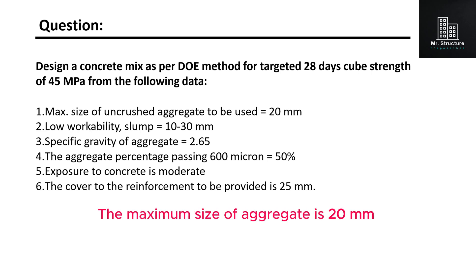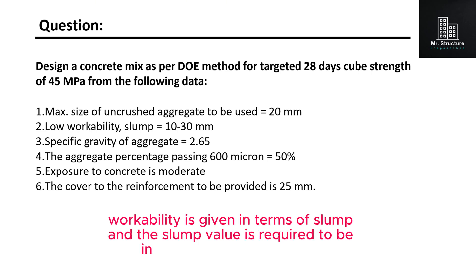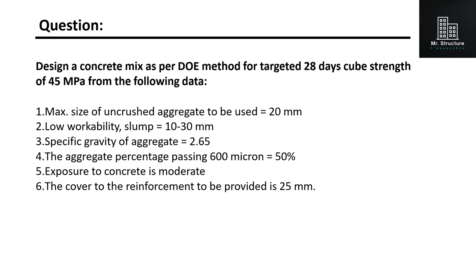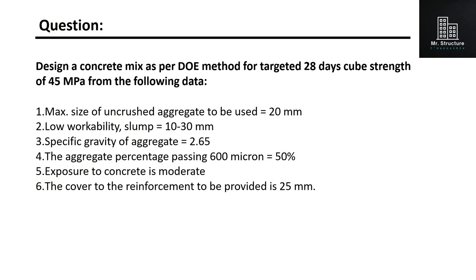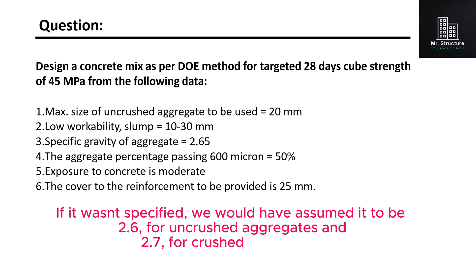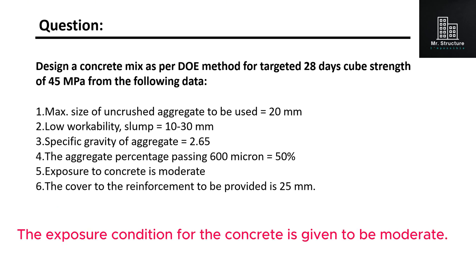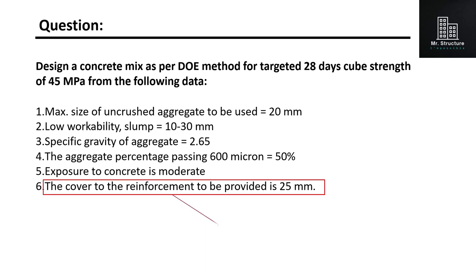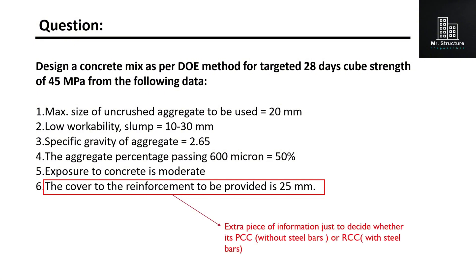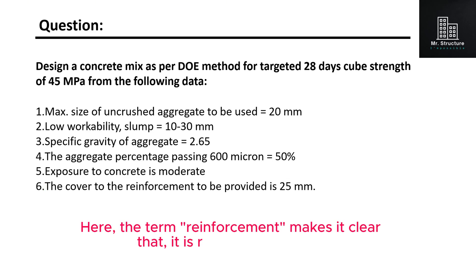The maximum size of aggregate is 20 millimeters and the aggregate type is uncrushed. Workability is given in terms of slump, and the slump value is required to be in the range of 10 to 30 millimeters. The specific gravity of aggregates is given to be 2.65. If it wasn't specified, we would have assumed it to be 2.6 for uncrushed aggregates and 2.7 for crushed aggregates. The exposure condition for the concrete is given to be moderate. The term reinforcement makes it clear that it is reinforced concrete.